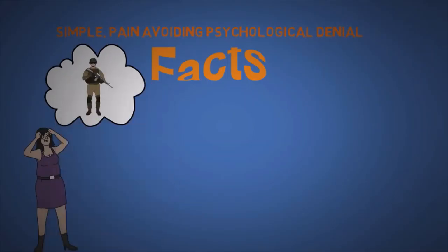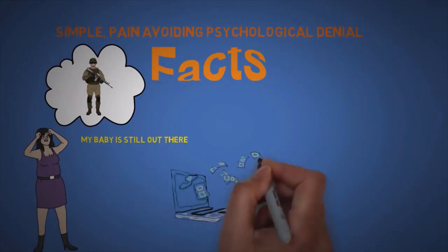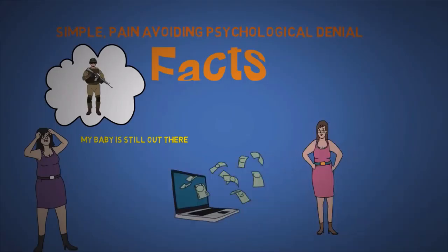The eleventh is simple pain avoiding psychological denial. We have a habit of distorting the facts. There are stories of mothers who receive news that their son from the army died and refuse to believe it. We can trick ourselves to numb the pain. Get rich quick or lose weight quickly scams work effectively on people who are in denial.